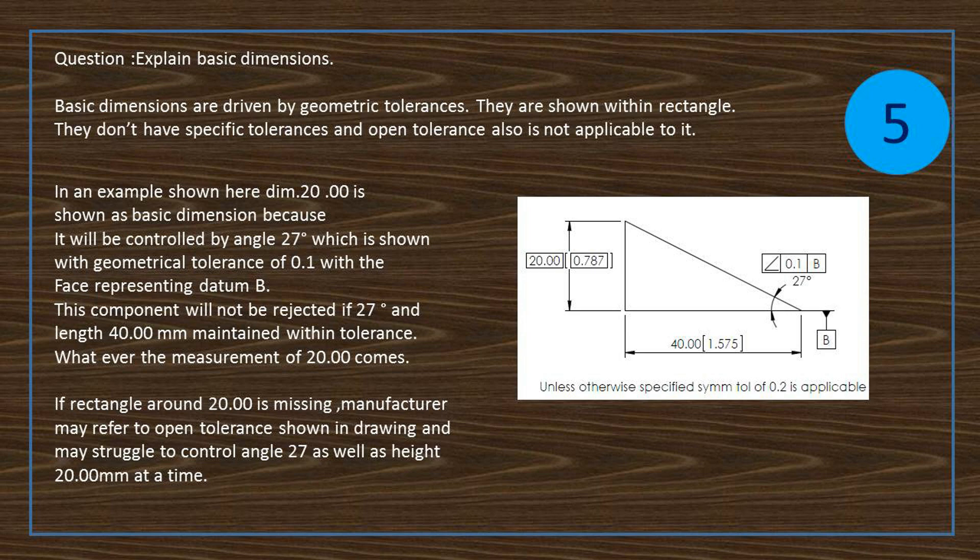If rectangle around 20 is missing, manufacturer may refer to open tolerance shown in drawing and may struggle to control angle 27 as well as height 20 at the same time.